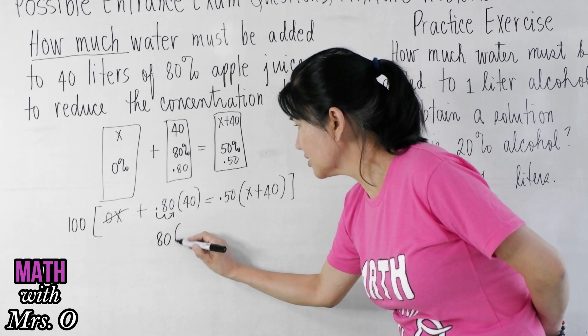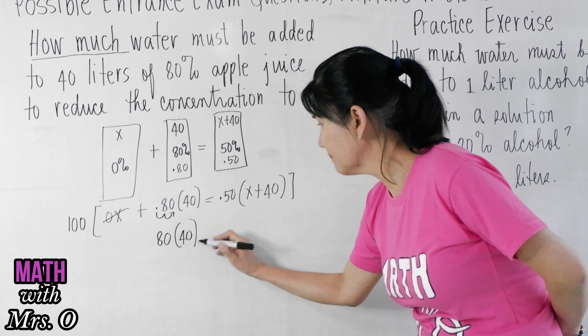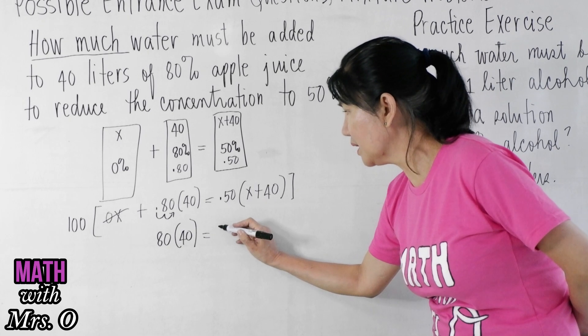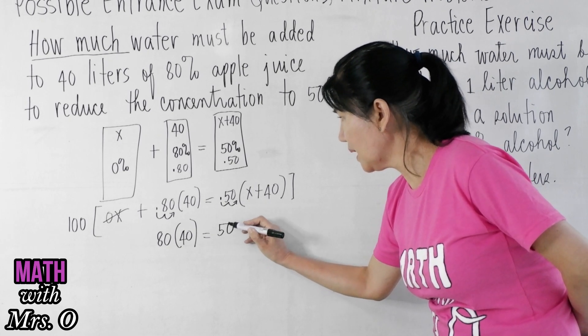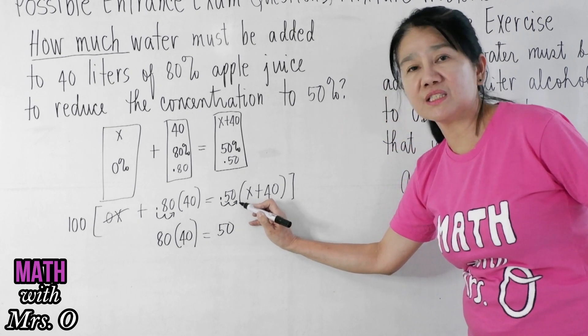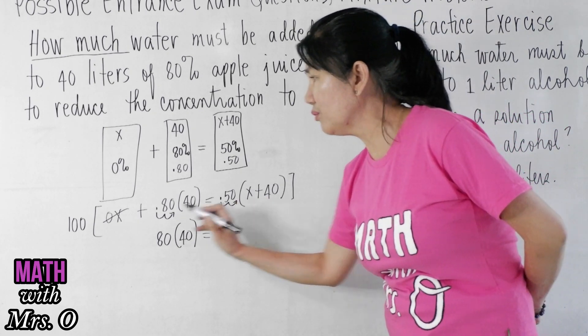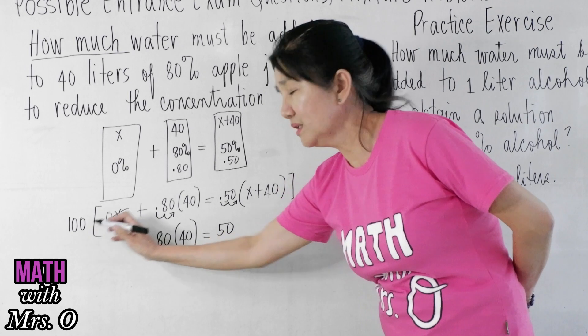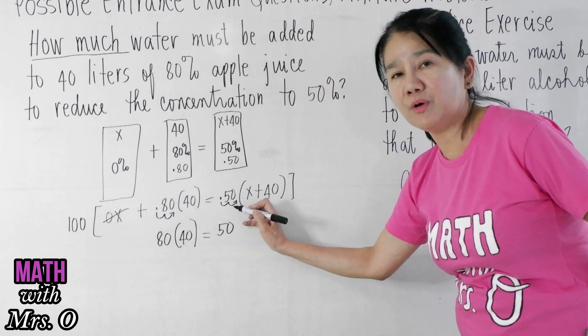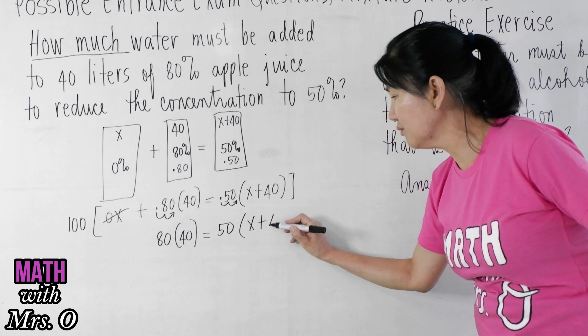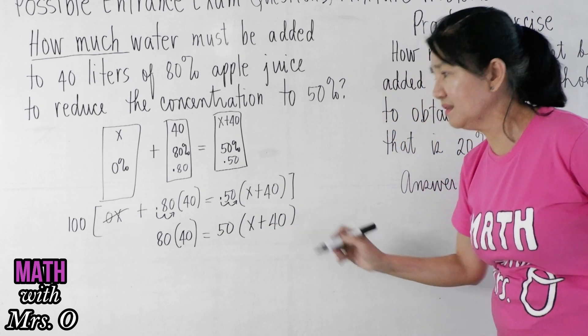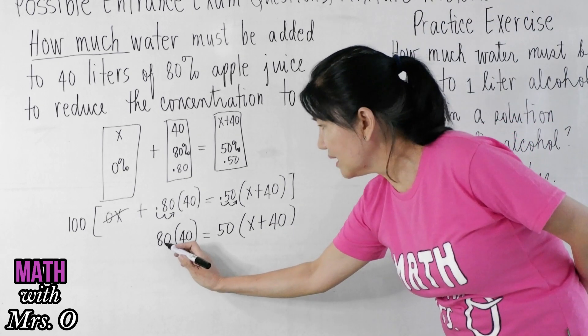So, times 40, 0.50 becomes 50. I'm moving the decimal point 2 places to the right. Remember, when we are multiplying by 100, we simply move the decimal point 2 places to the right, times (x plus 40). And then simplify.